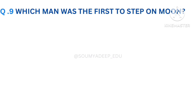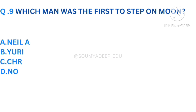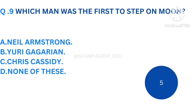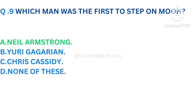Which man was the first to step on the moon? The options are Neil Armstrong, Yuri Gagarin, Chris Cassidy, none of this. Your time starts now. The answer is Neil Armstrong. Let's move to the next question.